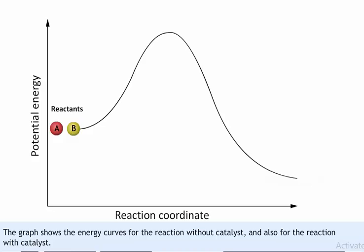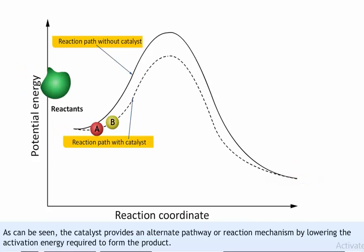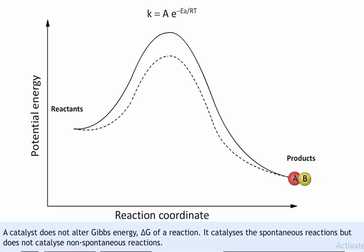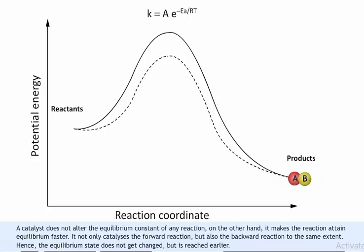The graph shows energy curves for the reaction without and with a catalyst. The catalyst provides an alternate pathway by lowering the activation energy required to form the product. The Arrhenius equation also tells us that lowering activation energy increases the rate of reaction. A catalyst does not alter the Gibbs energy (delta G) of a reaction; it catalyzes spontaneous reactions but does not catalyze non-spontaneous reactions. It is also found that a catalyst does not change the equilibrium constant of a reaction.